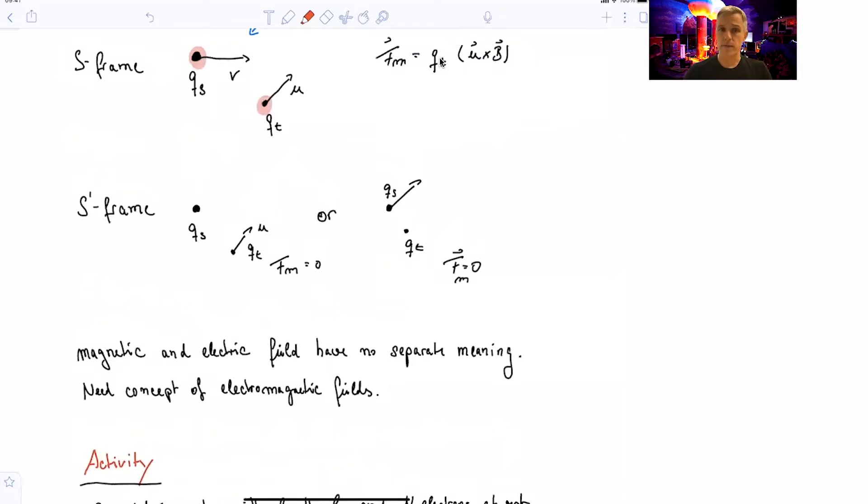So clearly, we do have to treat magnetic and electric fields in a consistent manner as we treat time and space and energy momentum in a consistent manner. So we need a concept of electromagnetic field. And previously in this class, we looked at electromagnetic fields, light, before.